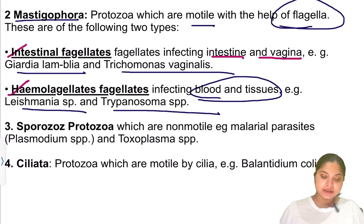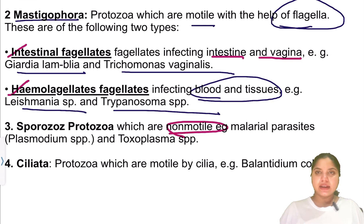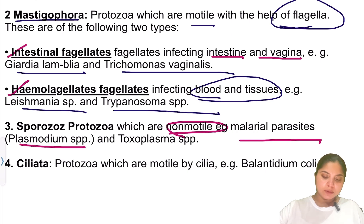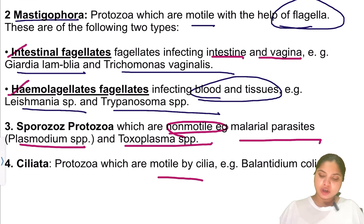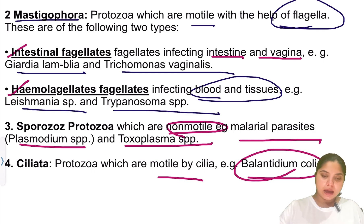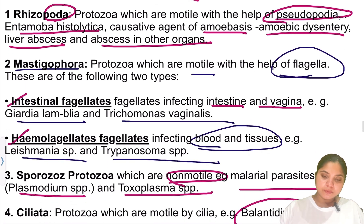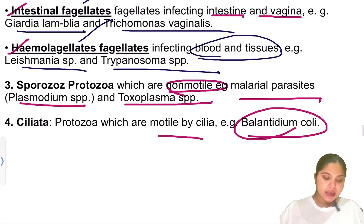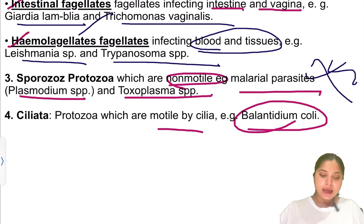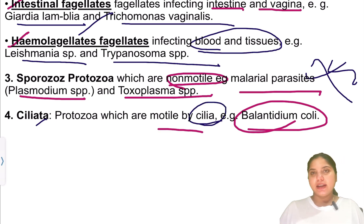The third class is Sporozoa — these protozoa are non-motile; they don't have flagella, pseudopodia, or cilia. Examples are malarial parasites such as Plasmodium species and Toxoplasma species. The fourth class is Ciliata — protozoa which are motile with the help of cilia. An example is Balantidium coli. To summarize: Rhizopoda use pseudopodia, Mastigophora use flagella (two subtypes: intestinal and hemoflagellates), Sporozoa are non-motile, and Ciliata use cilia.